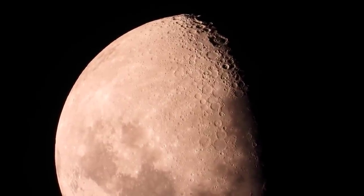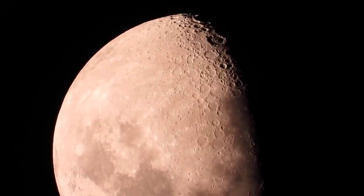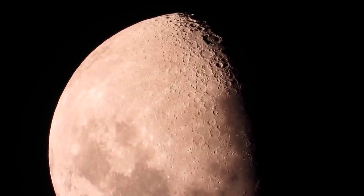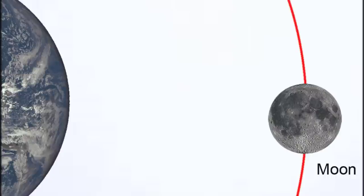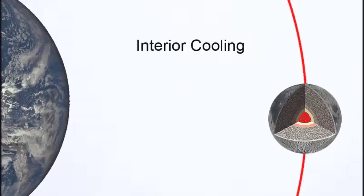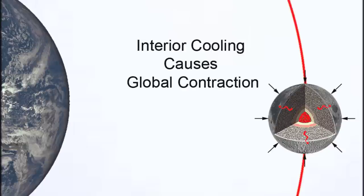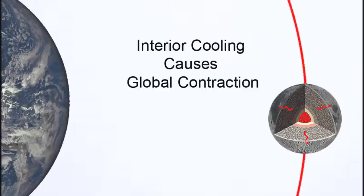Additionally, thermal stresses play a significant role in triggering moonquakes. As the Moon's interior gradually cools and contracts over time, the surface crust experiences strain and deformation. This thermal cycling, caused by the alternation between lunar day and night, leads to the release of accumulated energy through shallow moonquakes.